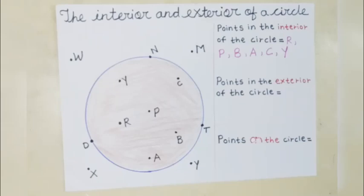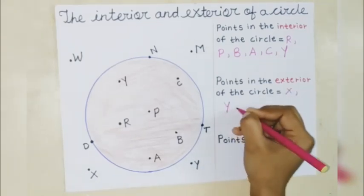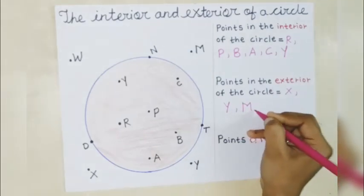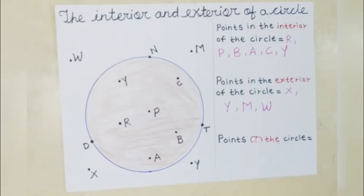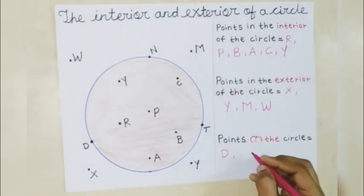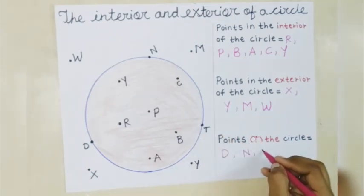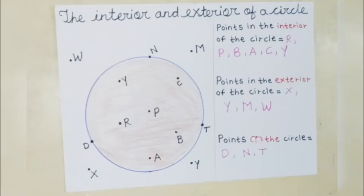Now we will see which points are in the exterior — that is, which points are outside the circle. Here: X, point Y, point M, and point W. Our next question is: points on the circle. So, point D is on the circle, point N is on the circle, and point T is on the circle. I hope you all understood interior points, exterior points, and points which are on the circle.